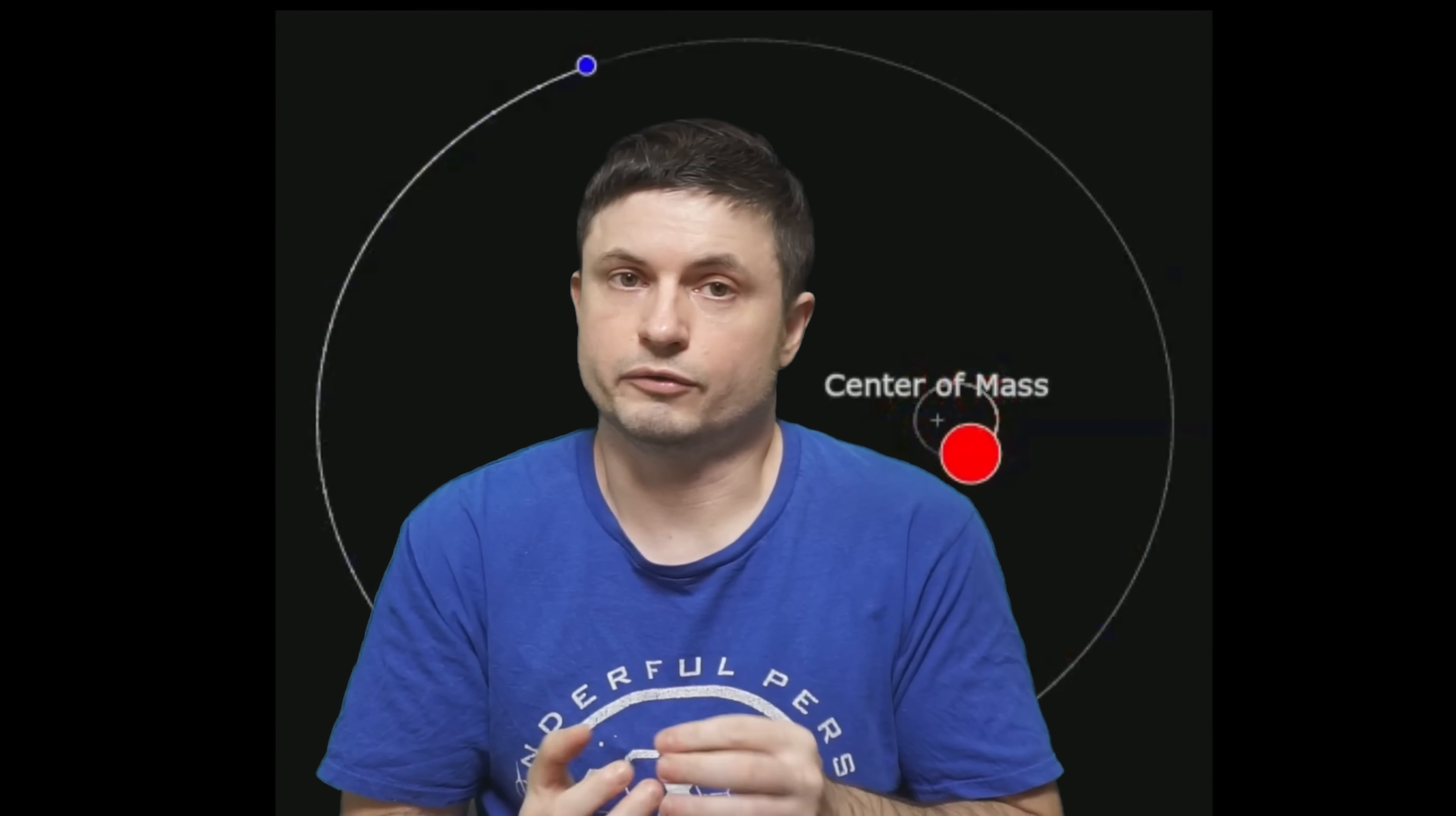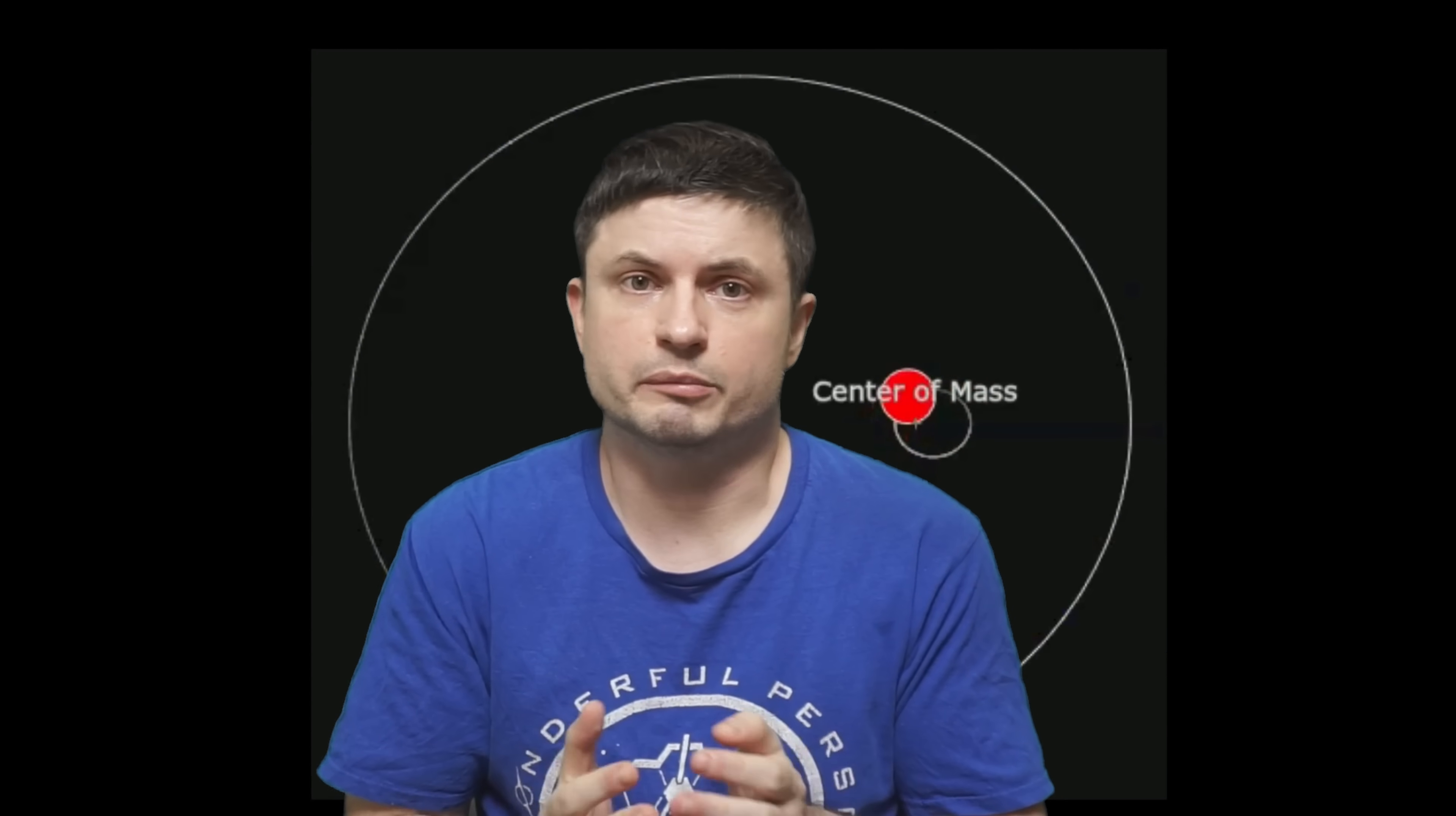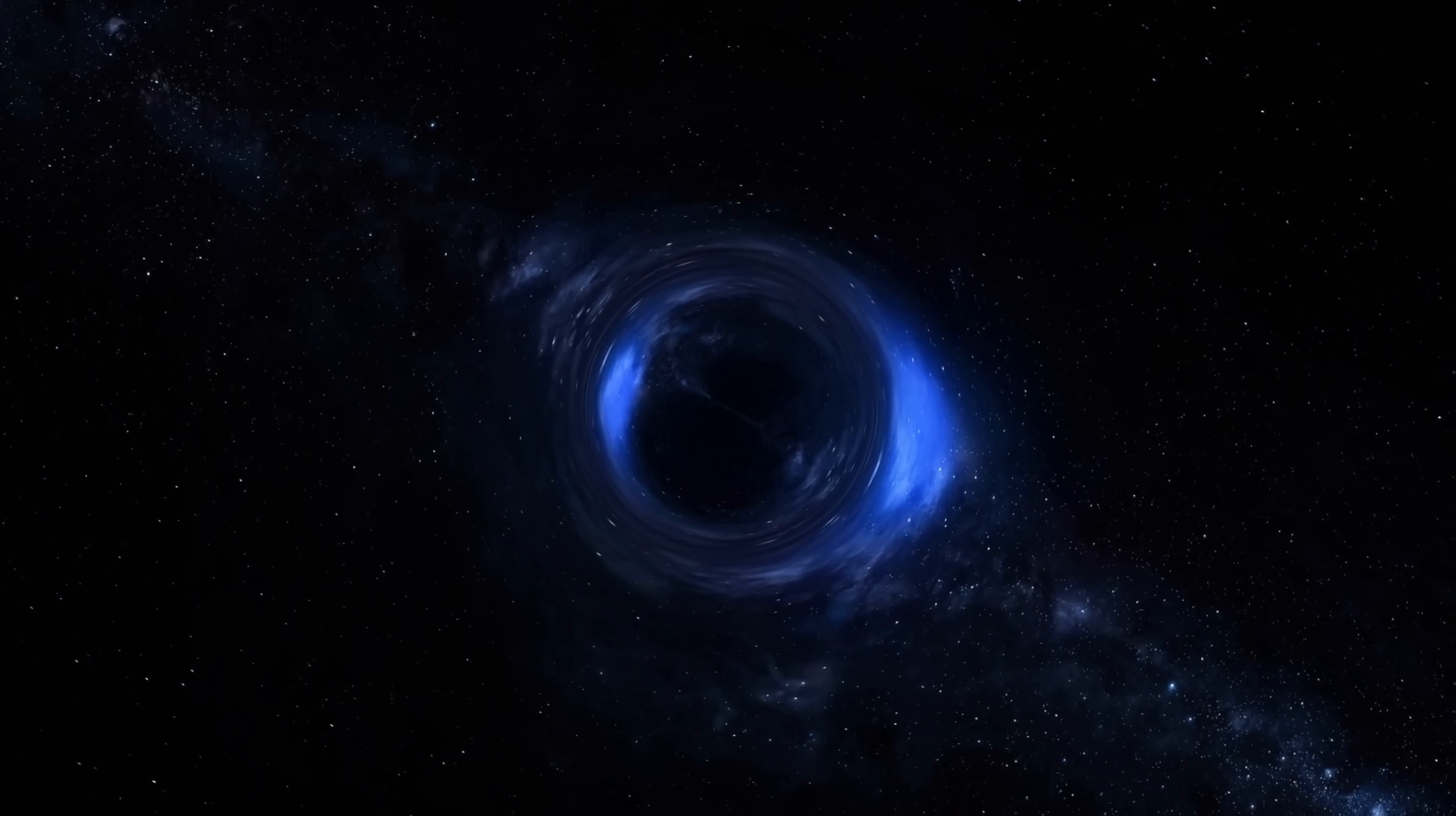And so this was actually the first time in history that scientists discovered dormant black holes by using this astrometry technique. This has never been done before. And once again this was not just one black hole, it was three, with one of them being the closest to the solar system. Once again the video should be in the description.